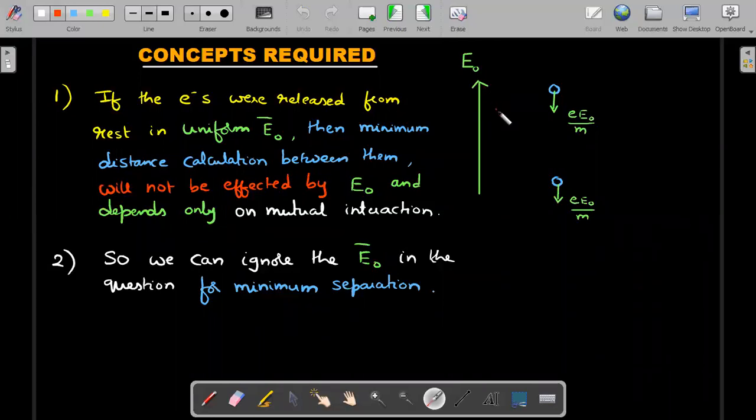Then apart from the interactive forces between the two electrons, this repulsive force, this electric field will produce a uniform force during their travel, eE₀/m and eE₀/m as shown in the figure. The minimum distance calculation between them will not get affected by this E₀.